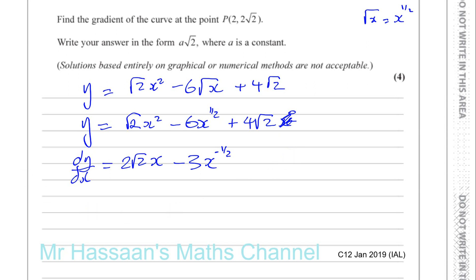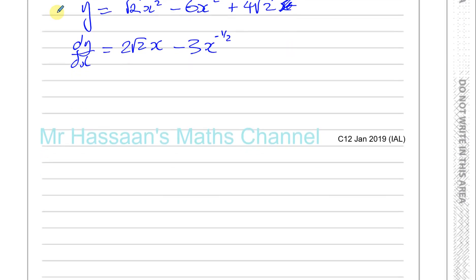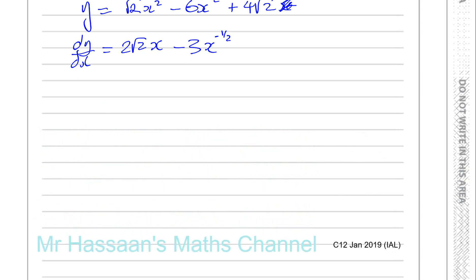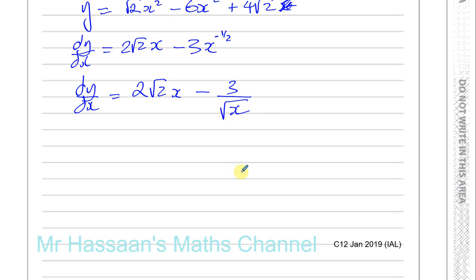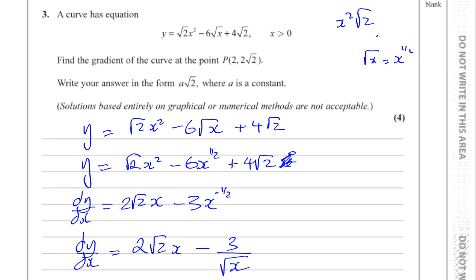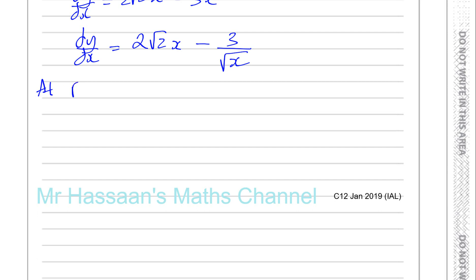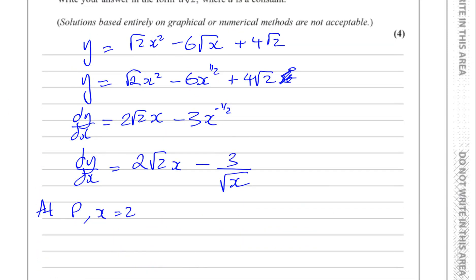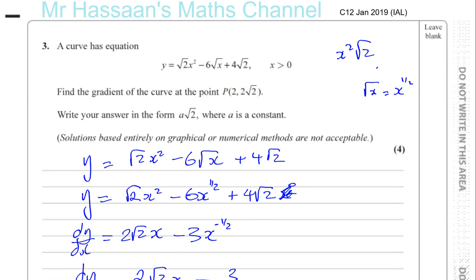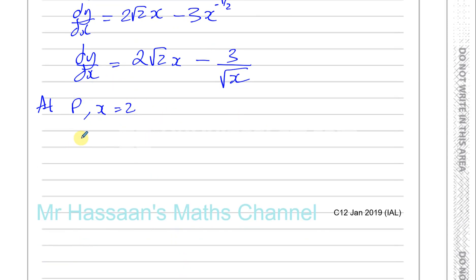That's the derivative, but we haven't just been asked to find the gradient function — we've got to find the gradient at a particular point. I'll rewrite the second term in a substitution-friendly form: dy/dx equals 2 root 2 times x minus 3 over the square root of x. At point P, x equals 2, so dy/dx equals 2 root 2 times 2 minus 3 over the square root of 2.